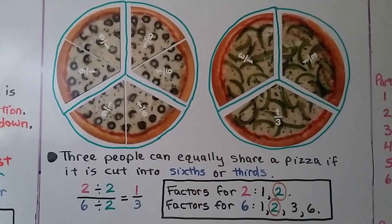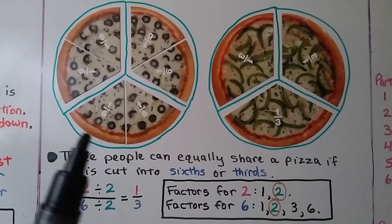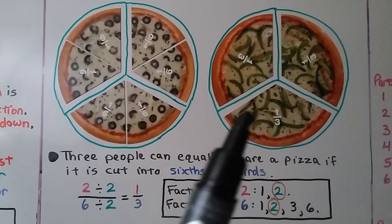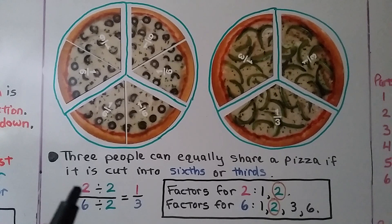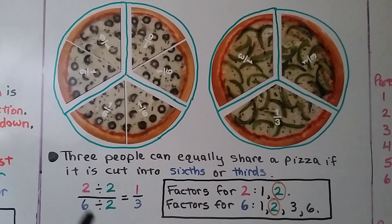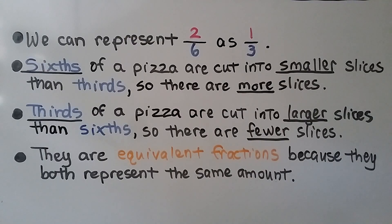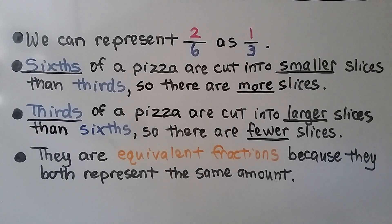Three people can equally share a pizza if it's cut into sixths or thirds. Each person would get two-sixths, or each person would get one-third. If we divide two-sixths — the numerator and denominator — both by two, because two is the common factor for two and six, we get one-third. Two-sixths is equal to one-third. Sixths of a pizza are cut into smaller slices than thirds, so there are more slices. Thirds are cut into larger slices, so there are fewer slices.